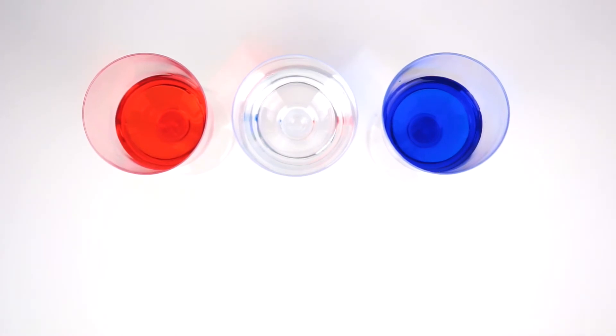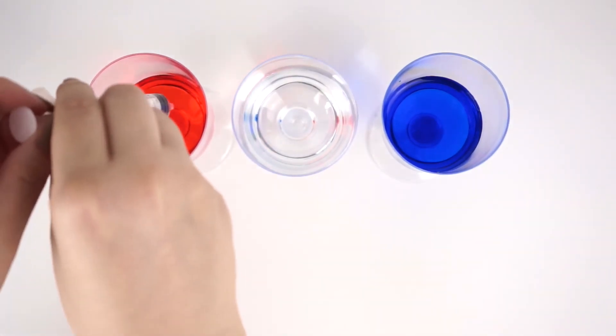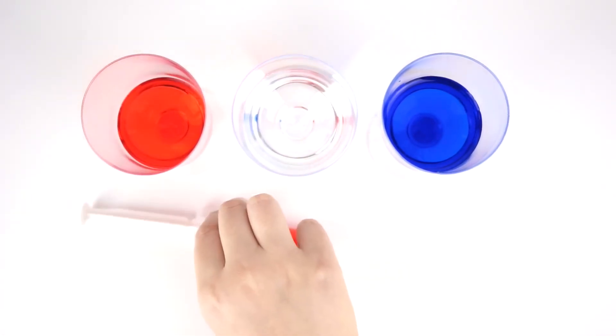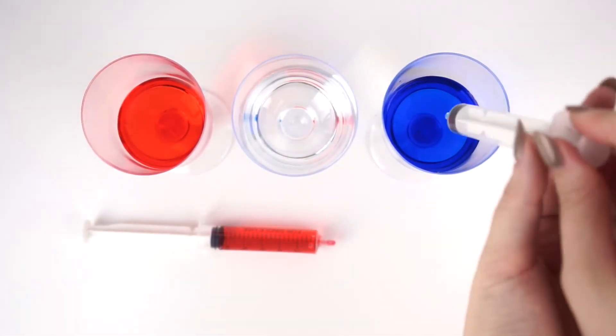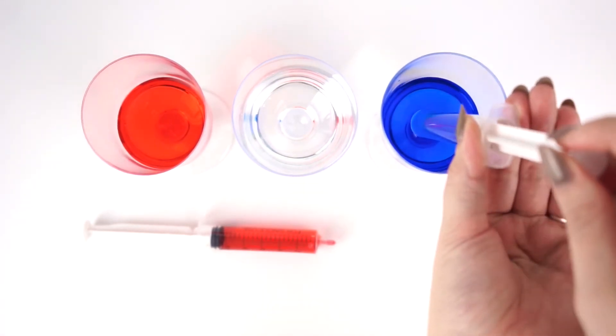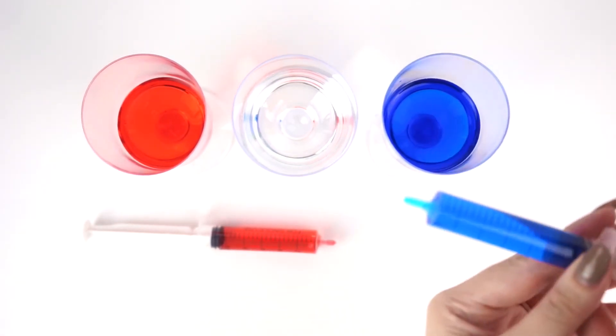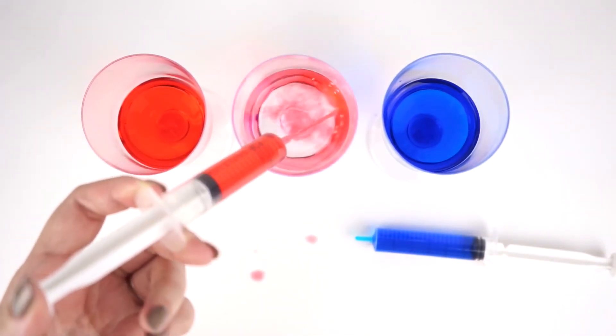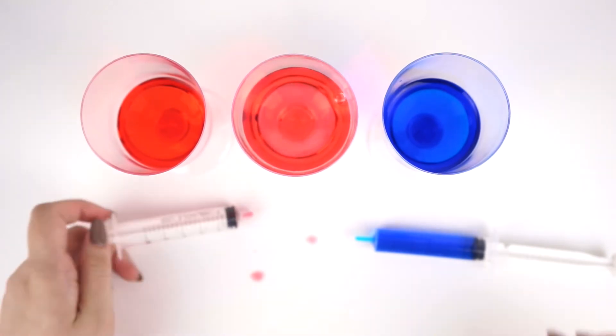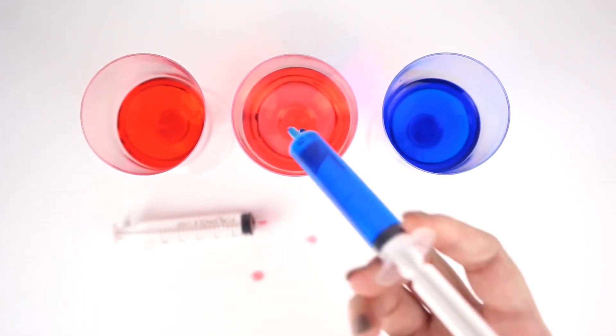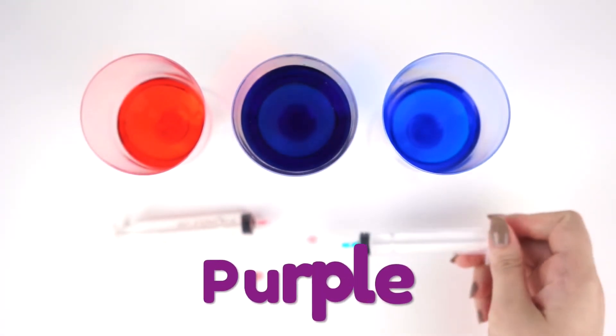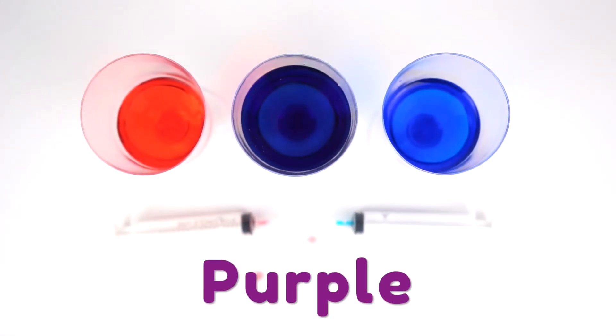Okay, let's see what happens when we mix red and blue. So I'm just going to grab some red with my little syringe. Put that down, and let's grab some blue. Suck up some blue. Let's put the red in first, squirt that in, and then the blue. Whoa, look at that. It made purple. How cool. Red and blue make purple.